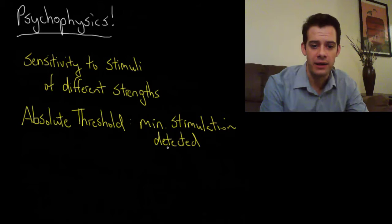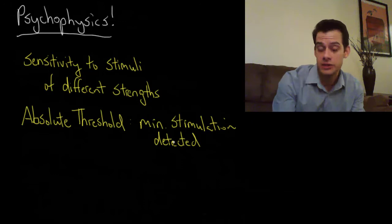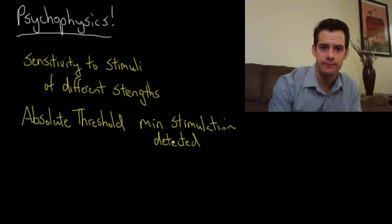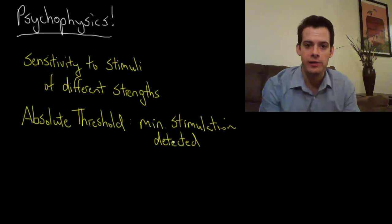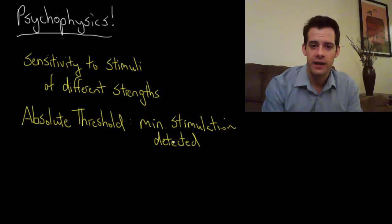For instance in the case of vision I might want to try to find out what's the dimmest light that you could say that you see. So I could turn on a very dim light and ask you whether you can see it or not. Or in the case of hearing, I could play a very quiet sound and ask you whether you hear it or not, and I'm trying to find out how quiet can the sound be where you still hear it.